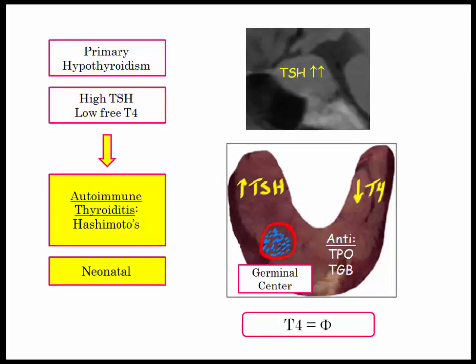The disorders you should be familiar with are autoimmune thyroiditis — more familiar as Hashimoto's thyroiditis — and neonatal hypothyroidism, also called cretinism. For extra emphasis, the characteristic pathologic feature seen in Hashimoto's thyroiditis is the germinal center. If they describe a patient with hypothyroidism and ask the likely pathologic finding, look for the answer which includes a germinal center. Note also the characteristic autoantibodies: antithyroid peroxidase antibody and antithyroglobulin.